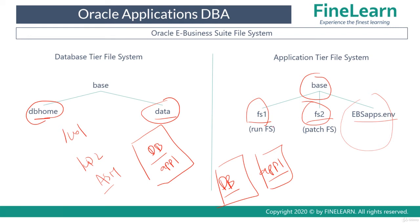FS1 and FS2 are the eBusiness Suite file system directories. In Oracle eBusiness Suite release 12.2, Oracle introduced something called the dual file system. At any point in time, users connect to only one of these — FS1 or FS2. For example, let's assume FS1 is the run file system. The responsibility of the run file system is to ensure all user requests are handled. FS2 is mainly used for maintenance.